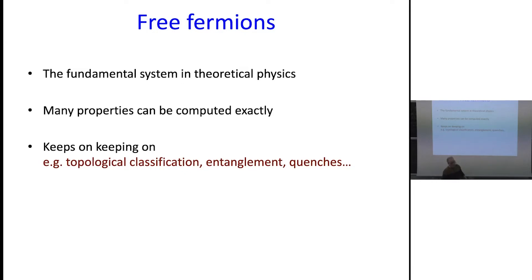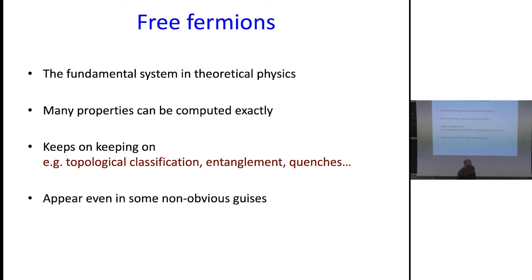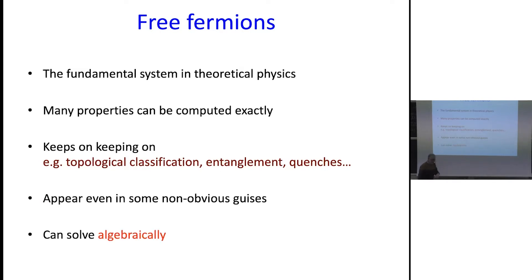I've so many times in my life seen this shrug — 'oh, it's just free fermions.' But you try computing entanglement quantities in a free fermion system. It's doable, but it is not trivial. Lots of interesting things have been learned in recent years. One thing I'll emphasize today is they don't always come up where you expect them. Another thing I'll emphasize is you can frame it in a very algebraic fashion, and I'll be very precise about that. People who study integrable models like algebra.